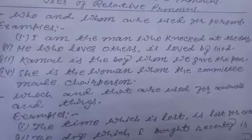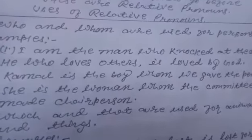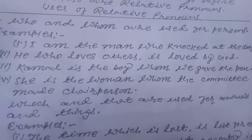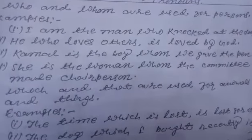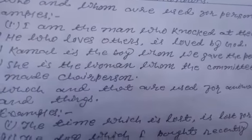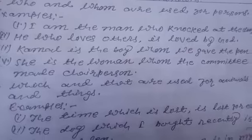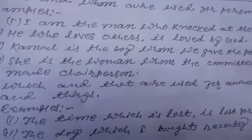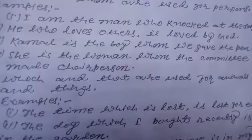Udaaharan ke roop mein aap yahan dekh sakte ho: First example — I am the man who knocked at the door. Yani main hi voh aadmi hoon jisne darwaze ko knock kiya, yani khatkhataya. Second example — He who loves others is loved by God. Voh jo doosre ko prem karta hai, use Ishwar prem karte hain.